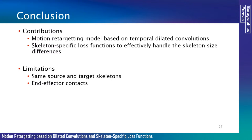Our contribution is an effective and efficient retargeting model based on temporal dilated convolutions, making the model stable and robust when training with various characters. Skeleton-specific loss functions make the model reflect skeleton size differences effectively. Limitations include the assumption that source and target skeletons have the same number of joints. Future work envisions retargeting motions between heterogeneous skeletons using metric learning, and extending the objective function to include loss terms for end effectors such as hands and feet to avoid foot-skating artifacts.